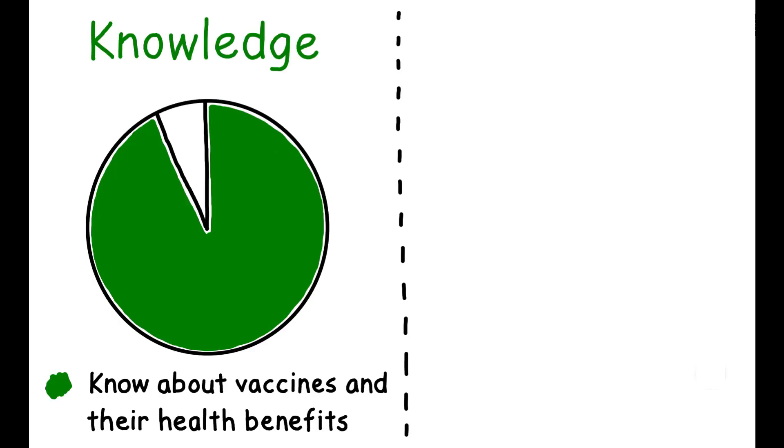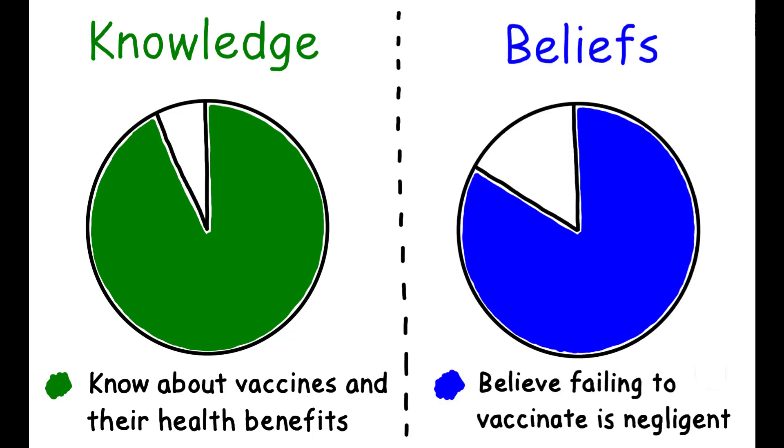In a baseline survey, the author finds that 94% of communities know that children need five vaccinations and are aware of the health benefits, and 83% of communities believe that parents who fail to vaccinate their children are negligent.